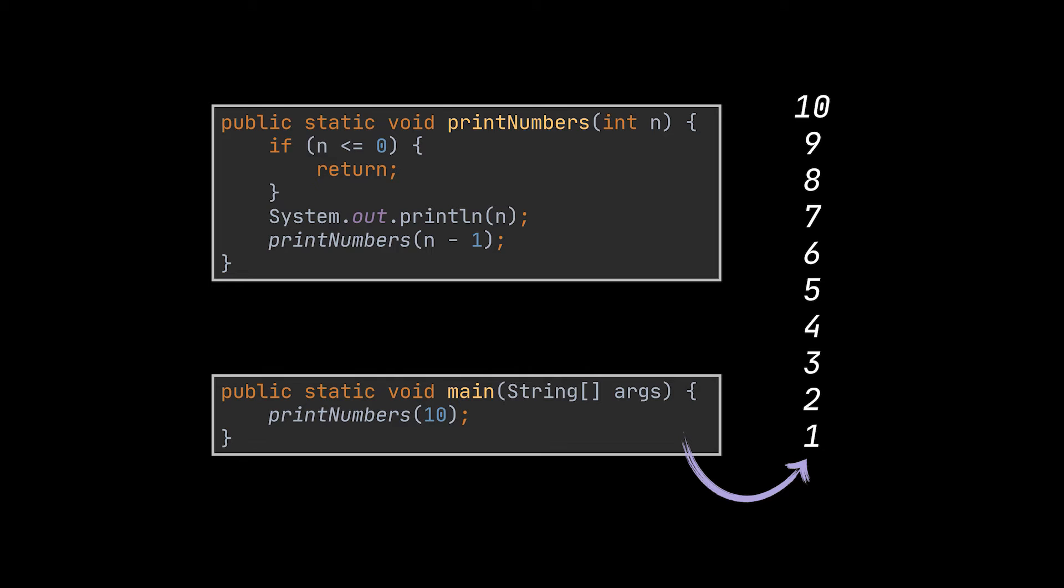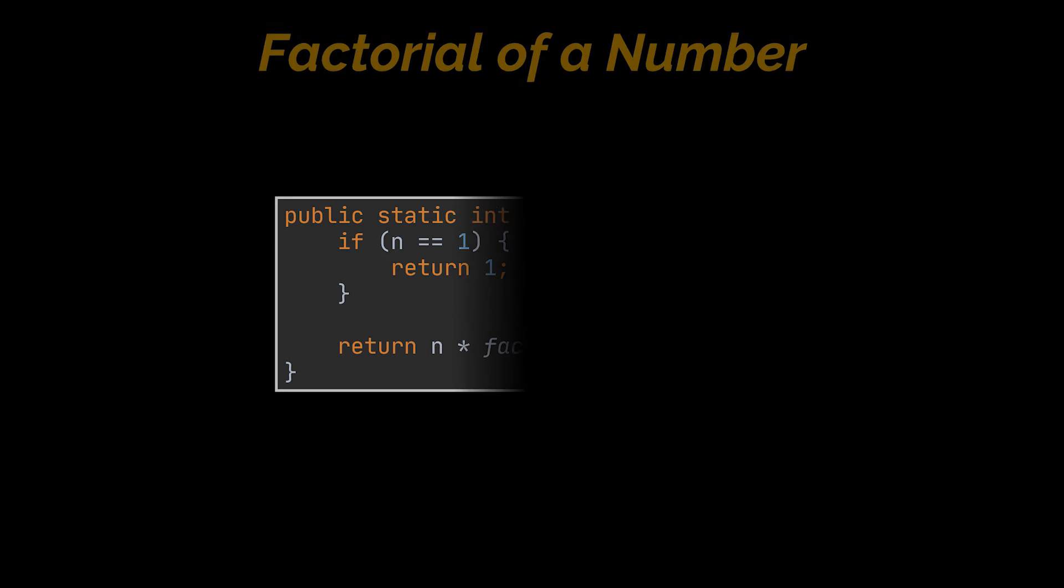Notice how the last statement executed by this method is a recursive call, making it a tail recursive method. Okay, what about the factorial method we implemented in the last recursion video? Is it tail recursive?